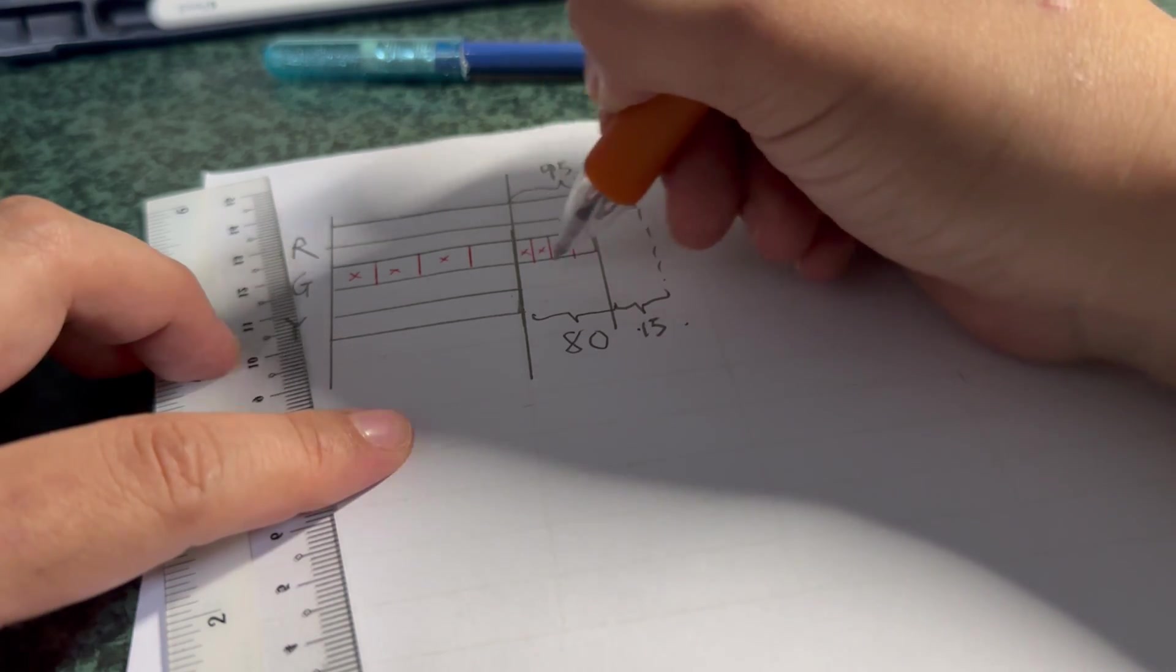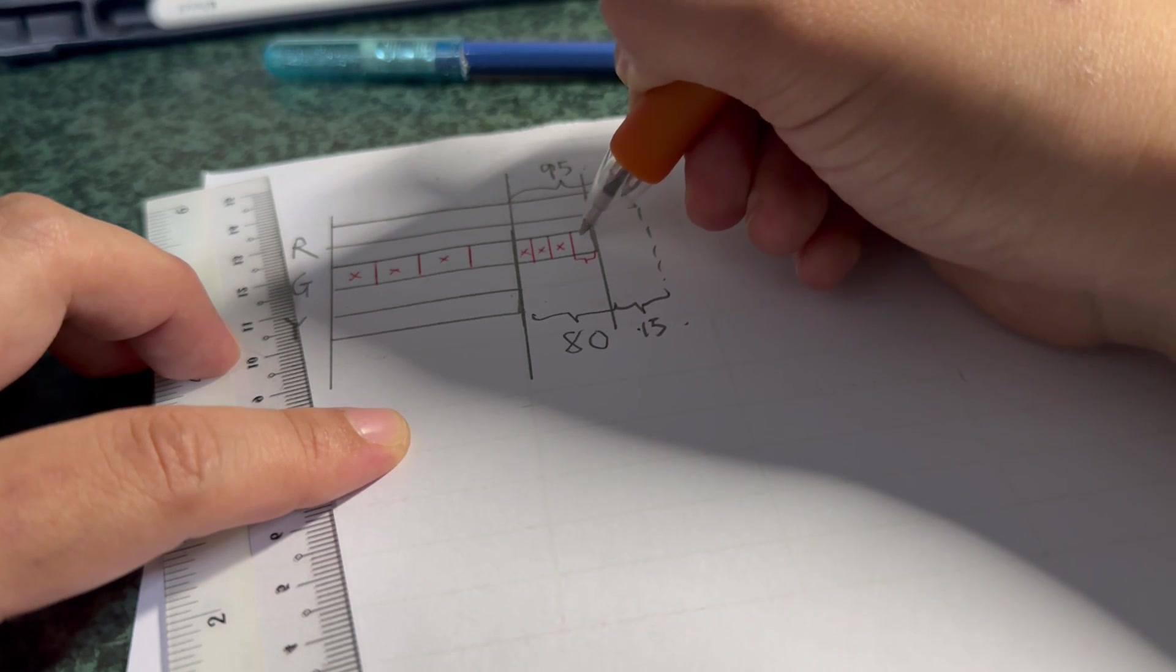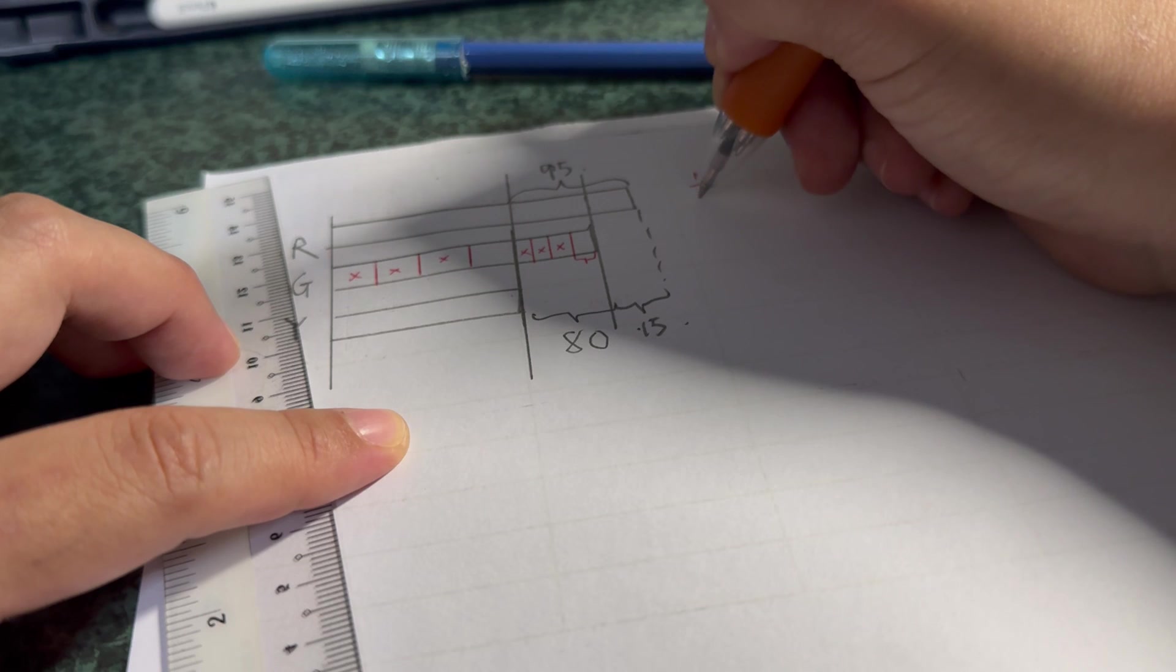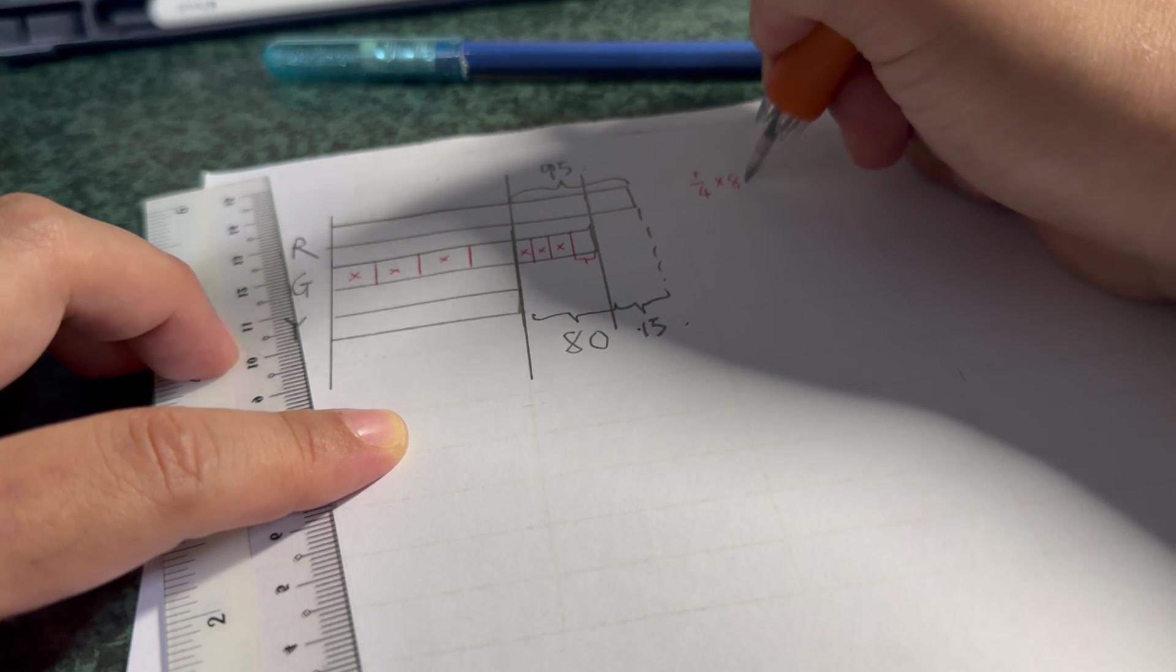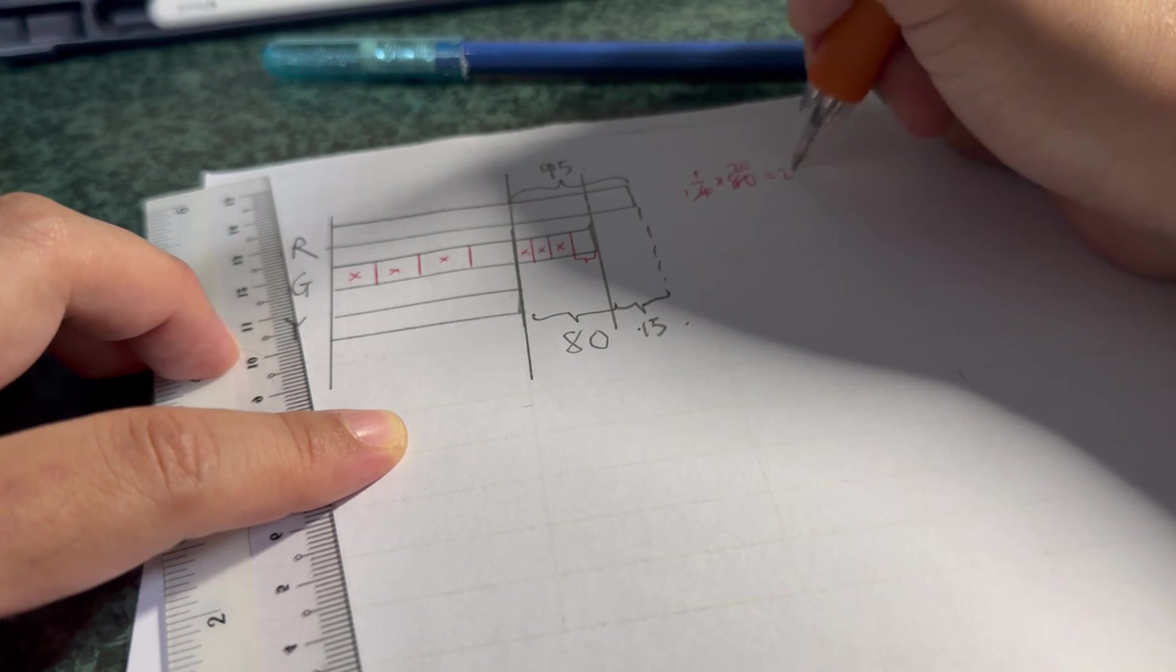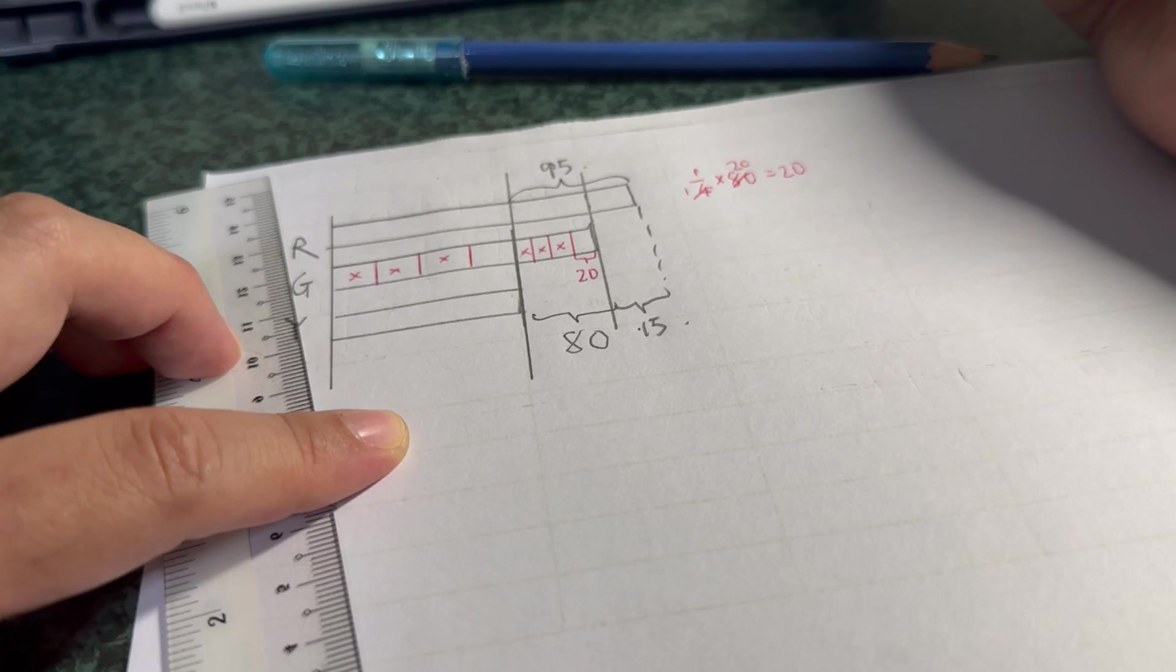And since this is 80, right, if three quarters used, what is this? Easy, right? One quarter times 80, which is 20. This thing here is 20. All right.